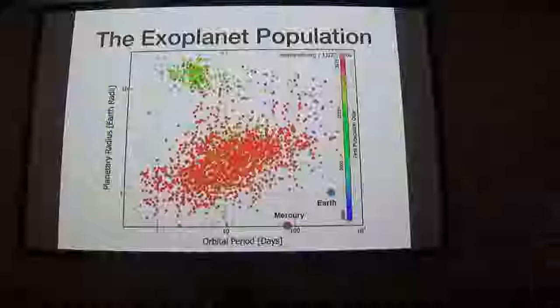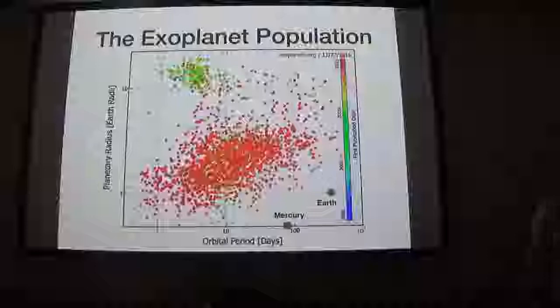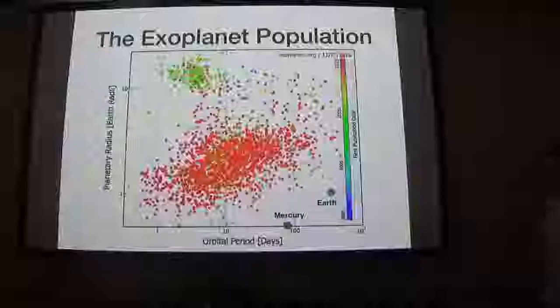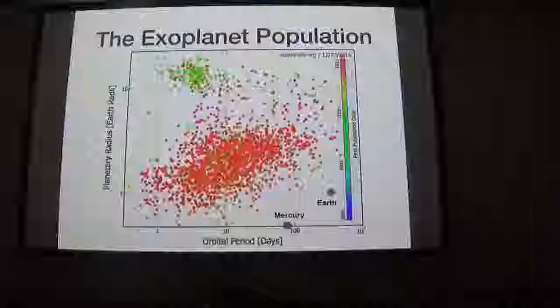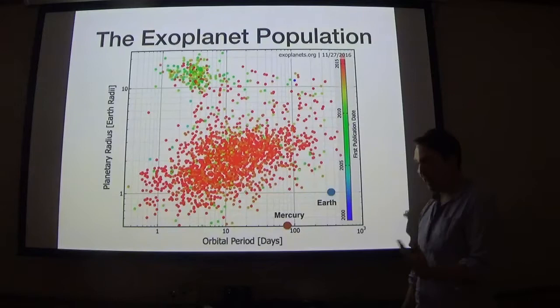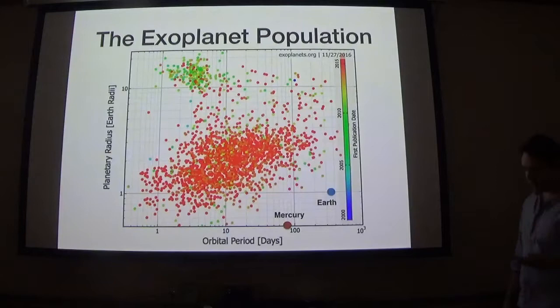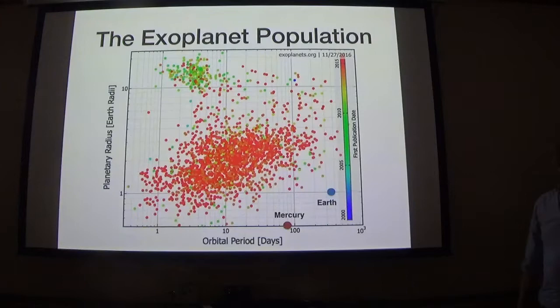The important thing to emphasize is that the population is billions of years old, very distinctly separated in time from the formation phase, which only lasted a few million years. We want to consider any processes that may have happened between formation and today, because if we directly say this population is representative of how it formed, we may run into traps. If you consider planets inside 100 days with radii between one and four Earth radii, their occurrence rate is incredibly common.